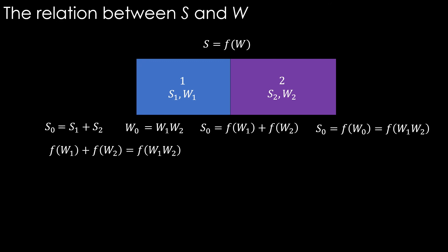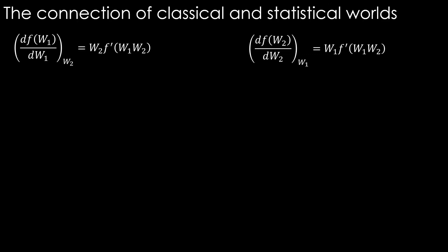If we keep W2 as constant and differentiate, then we get this. Instead, if we keep W1 as constant and differentiate, we get this. Now take these two equations. Multiply the left equation by W1 in both the sides, and multiply the right equation by W2 in both the sides. We get these two equations. Now the right hand side of both these equations is the same. Therefore it is a constant.